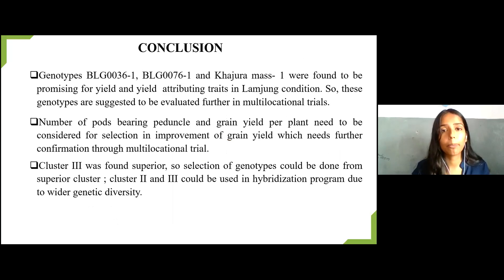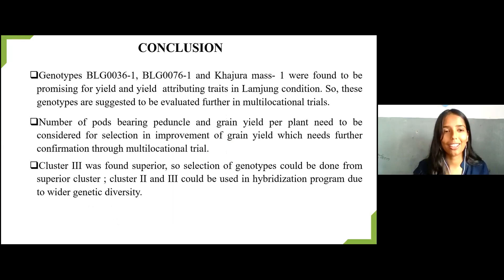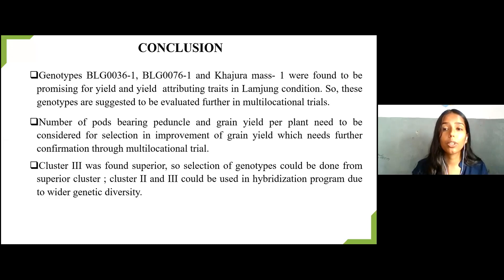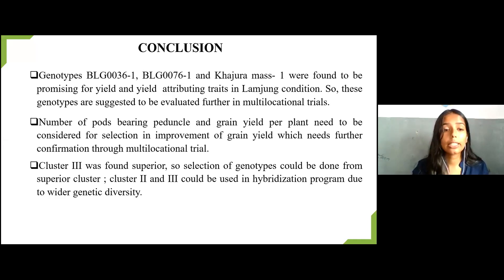In conclusion, genotypes BLZ00361, BLZ00761, and Khajura Mass 1 were found to be promising for yield and yield-attributing traits under Lamjung environmental conditions, and are suggested for further evaluation in multi-locational trials. Traits like number of pod-bearing peduncles and grain yield showed high GCV, high heritability, and high genetic advance percent of mean, and need to be considered for selection and improvement of grain yield. These results also need further confirmation through multi-locational trials. Clusters 2 and 3 could be used for hybridization programs due to their wider genetic diversity, while selection could be done from the superior cluster, that is Cluster 3.